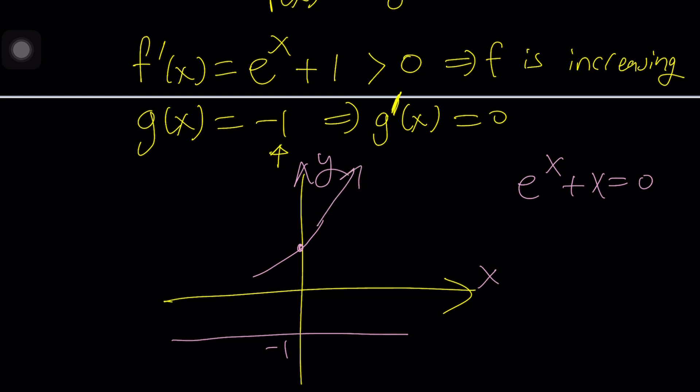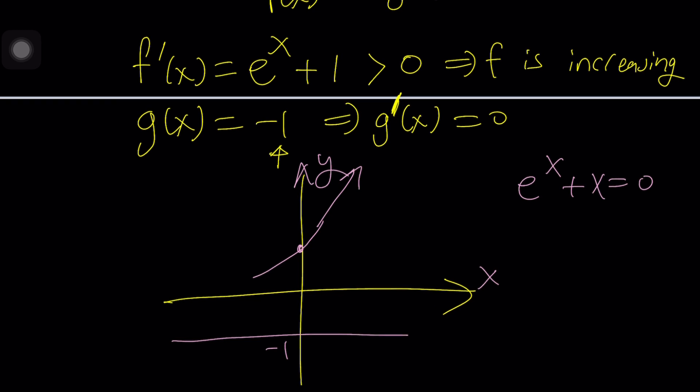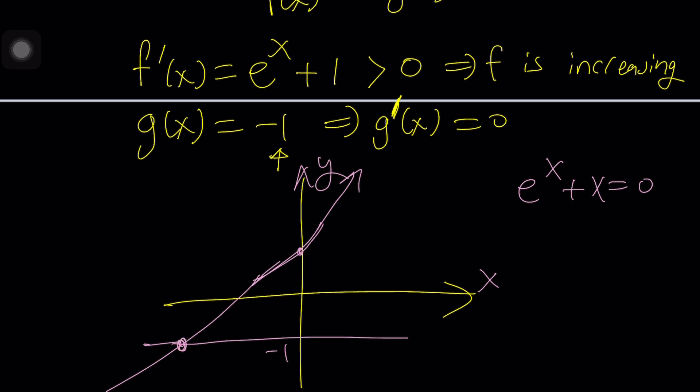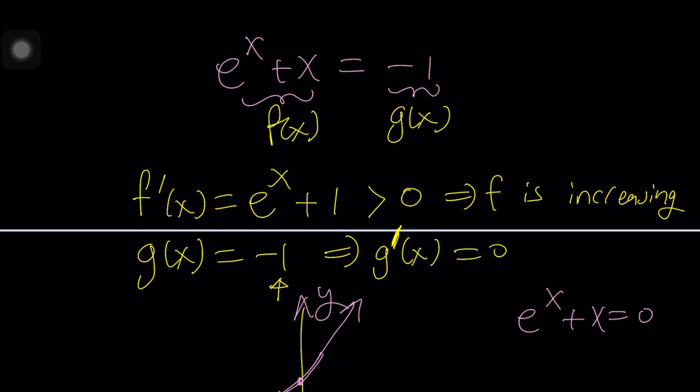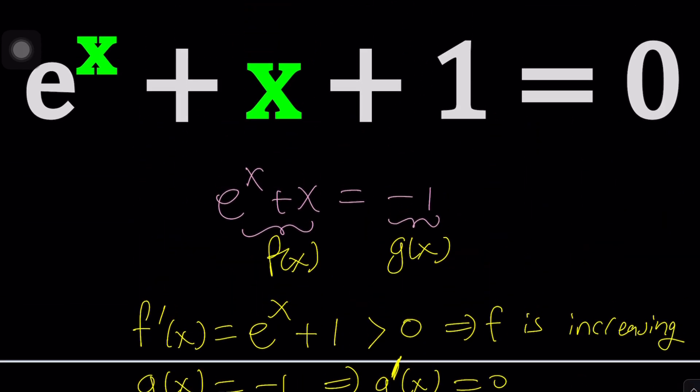So in other words, we always have an increasing function. And we do have, by the way, of course, it is going to cut the X axis, of course, because we want them to intersect, right? Of course. So what's going to happen is that they will intersect at some point. And there will only be one intersection point because you have an increasing function intersected by a horizontal line. Does that make sense? So at least this gives us an idea about the number of solutions. It doesn't give us the solution, but it just gives us the number of solutions.